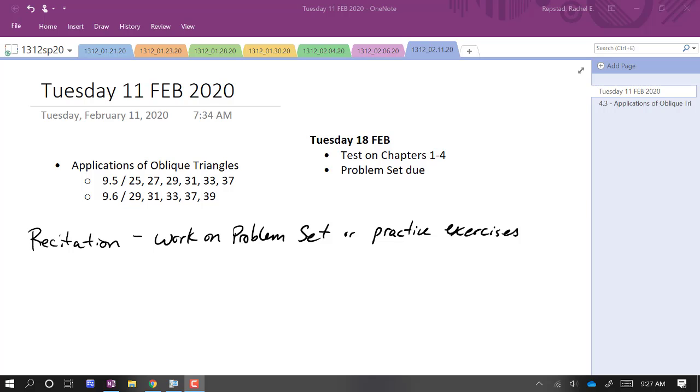We're going to finish chapter 4 today and look at some application problems with oblique triangles. The problems span both the law of sines and the law of cosines sections. Some of the problems were actually assigned as part of the exercises from that section in the notes already, but I just sort of listed them again. These are the actual application problems.